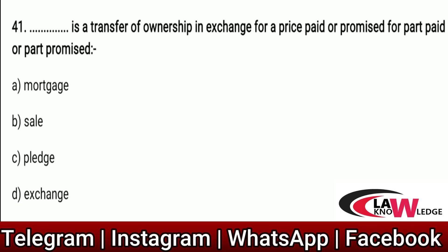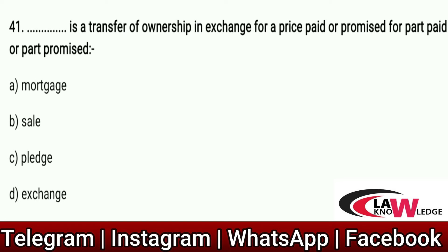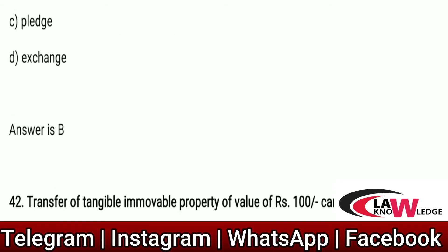Q41: Transfer of ownership in exchange for a price paid, or promised, or part paid and part promised — Option A: Mortgage. Option B: Sale. Option C: Pledge. Option D: Exchange. Correct answer is B. This is the definition of Sale.